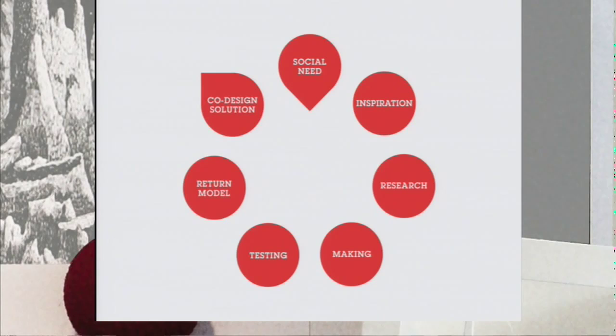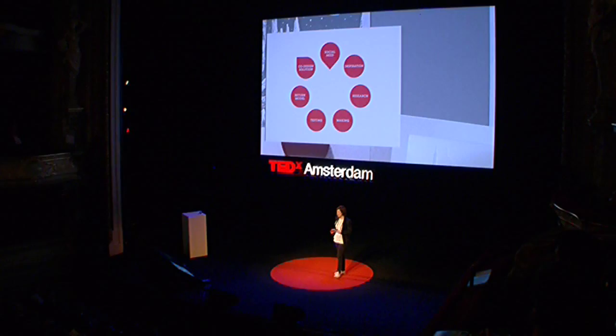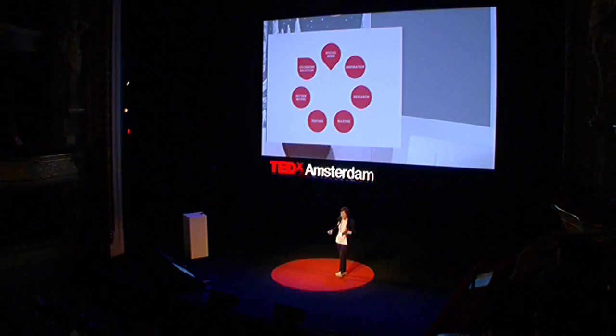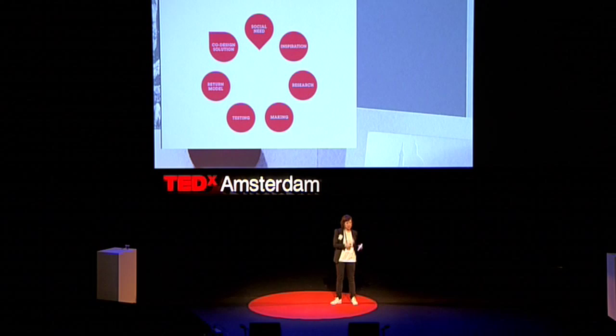Inspiration — we think you can find that pretty much anywhere. Then we get to researching: everything to do with the topic and the context, and also finding the right people to co-design with. The making is, of course, the most fun part, and I'm going to show you a quick making process in a few moments. We test, as in all design cycles. We always develop a return model, which for us is a combination of a business model and a social investment model. This whole thing together we call a co-designed solution.